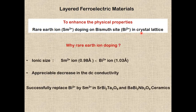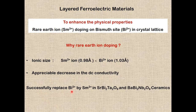The reason for choosing rare earth ions as a dopant is: first, ionic size — the ionic radius of samarium ion is less than that of bismuth ion; and second, it appreciably decreases the DC conductivity of these compounds. In our research work, we have successfully replaced bismuth ions with samarium ions in strontium bismuth tantalate and barium bismuth niobate ceramics and studied various physical properties.